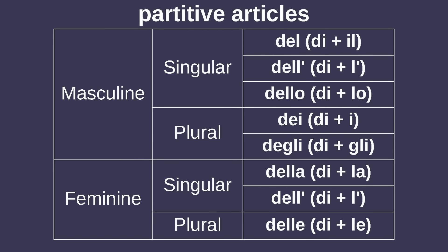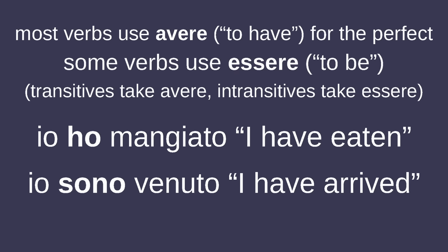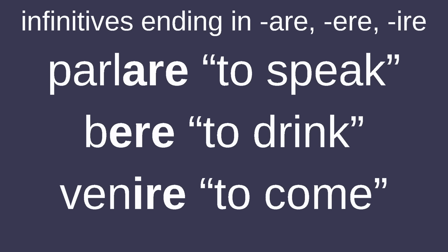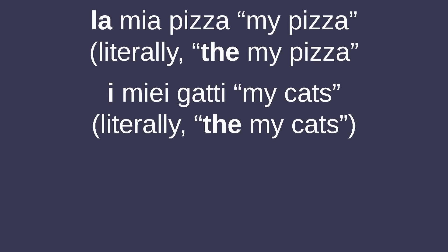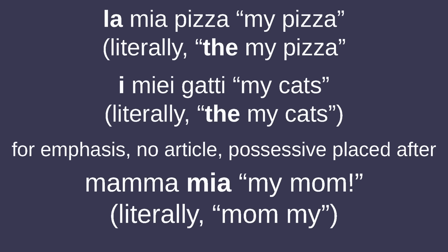Like French, there is a whole set of partitive articles, and some verbs use 'essere' (to be) to form the perfect instead of the typical 'avere' (to have). Since most Italian words end in vowels, infinitives end with -E, yielding -ARE, -ERE, and -IRE. Italian has a lot of contractions with prepositions such as DI, A, IN, CON, and SU. Possessive pronouns are usually preceded by definite articles and go before the noun, unless to convey emphasis — in which case, they're placed after, like in 'mamma mia!' Italians often use hand gestures in conjunction with speech to convey certain meanings.